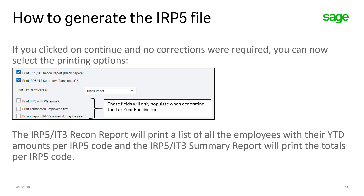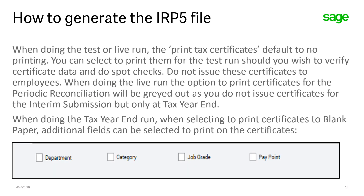If you clicked on Continue and there were no corrections required, you can select your printing options. The IRP5 IT3 Recon report will print a list of all employees with their year-to-date amounts per IRP5 code, and the IRP5 IT3 Summary report will print the totals per IRP5 code. When doing the test or live run, Print Tax Certificates will default to No. You can select to print them for the test run to verify certificate data and do spot checks, but you should not issue these certificates to employees. When doing the live run, the option to print certificates for the periodic reconciliation will be grayed out, as you do not issue certificates for the interim submission — only at tax year end. When doing the tax year end run and selecting to print certificates to blank paper, additional fields will populate that you can select to print on the certificates.